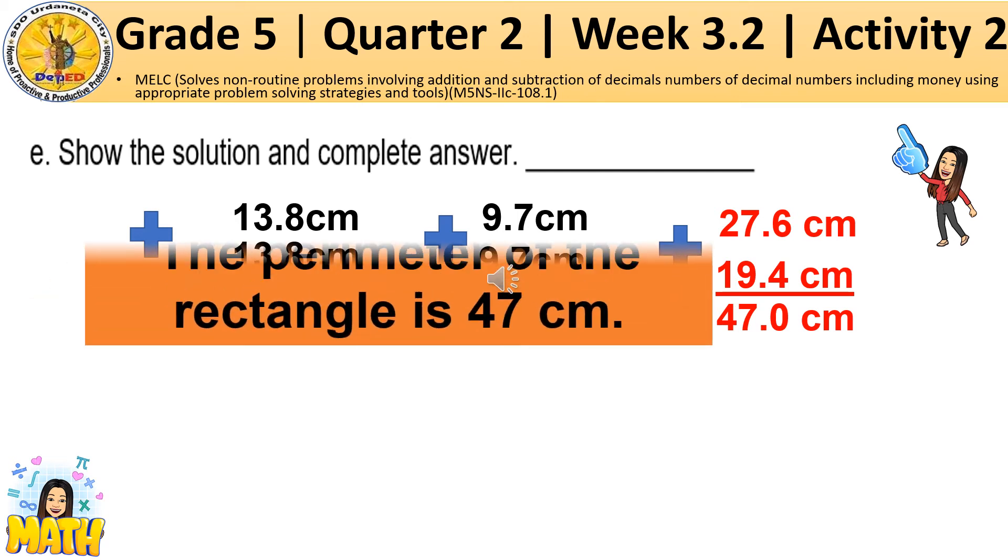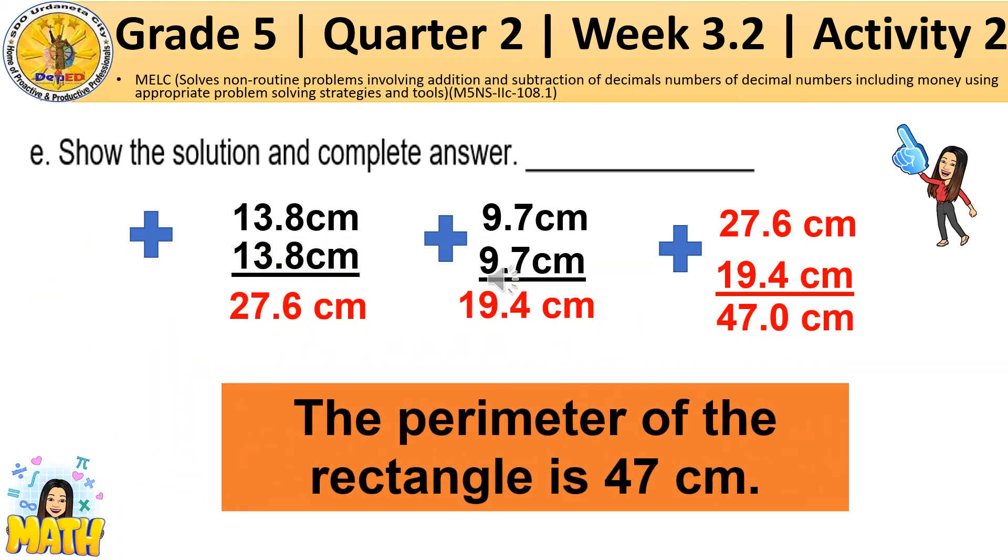The complete answer is the perimeter of the rectangle is 47 centimeters.